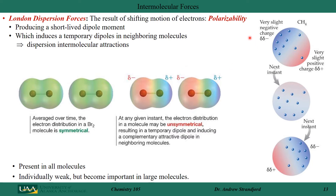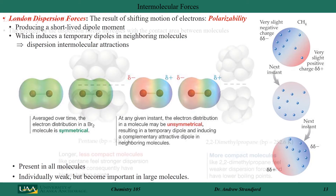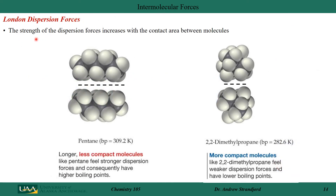In CH₄, a nonpolar molecule, at any instant some electrons may be on one side — giving a partial negative charge on one side and partial positive on the other. An instant later they're evenly dispersed, and later still they may shift to the other side. If other methane molecules are nearby, this influences them. This type of force is present in every single molecule. Individually it's weak, but it becomes important in very large molecules. Size matters — more surface area means more force between molecules.